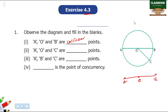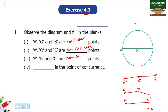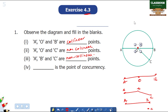Next — A, O, C. A, B, C are non-collinear points. O is the point of concurrency, because O is where the lines intersect.